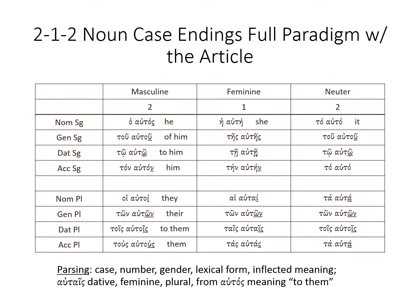When we think about the definite article and its consistency, the definite article is not going to change with a noun or a pronoun. It's going to stay exactly constant, and you've probably memorized this by now — if not, you should. Make sure that you get this down because it will help you. You can see the similarity in the genitive and the dative, accusative, and so forth, with just a few distinctions — especially with the nominative singular masculine.